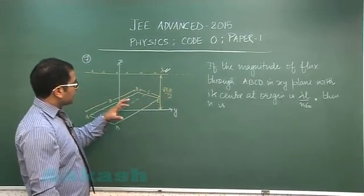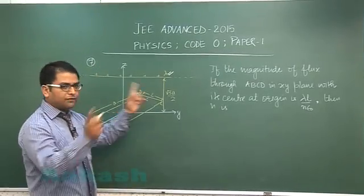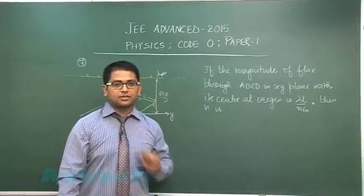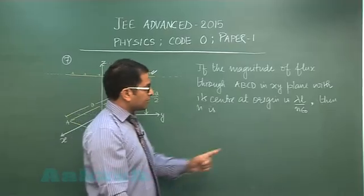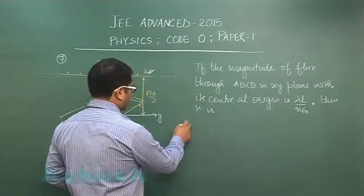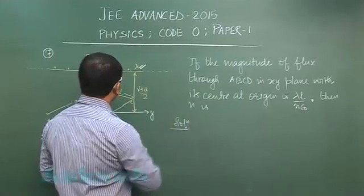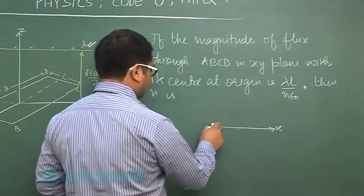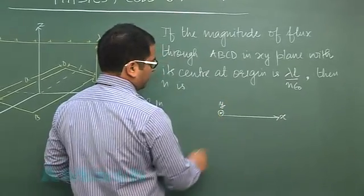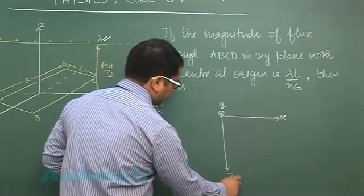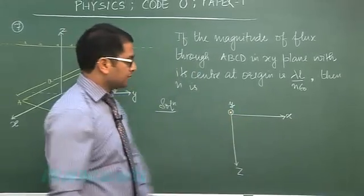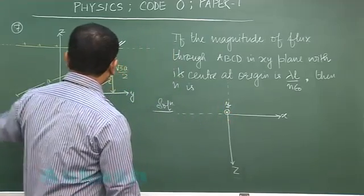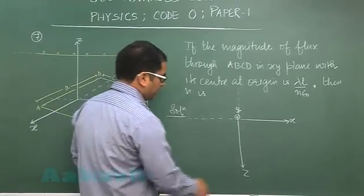You could visualize from the figure that some part of the total field will be cutting the rectangular plane, so the flux is nonzero and now we should be interested to calculate the numerical value. Let me try to simplify the figure by drawing planes in this way. This is x, then this would be y, and this is z. What I did is I took the y-axis out of the plane.